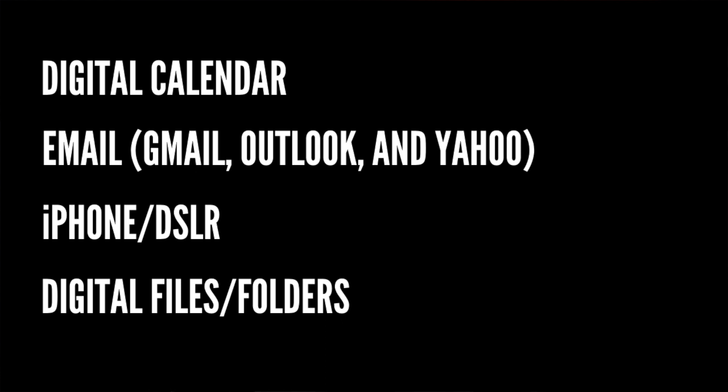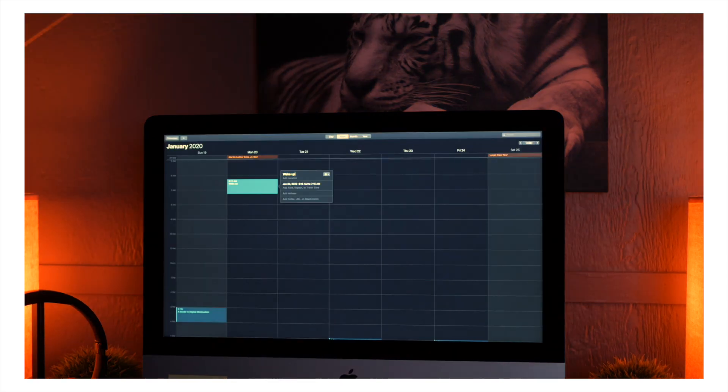Rather than just list off all four areas, I wanted to actually take it upon myself to go through all four categories and make sure each one is very simplified, because all these things are going to help organize your life and help you be a lot more productive. I encourage you to do this yourself — go through each of the four categories and make sure each area is very organized. So the first thing I wanted to tackle was my digital calendar.